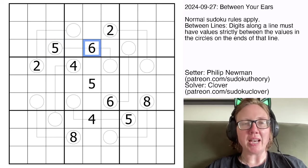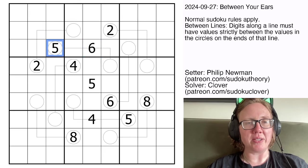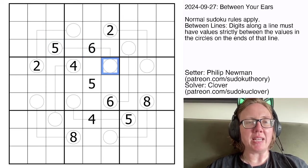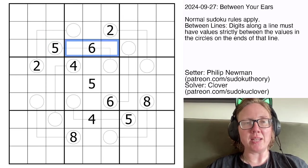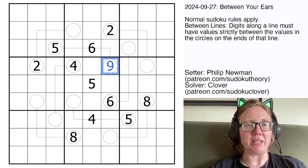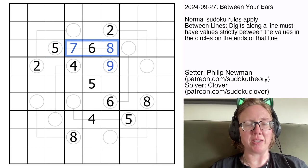So for example, because we already have a 6 on this line, 6 has to be in between 5 and something else, so the something else has to be a pretty high number. And in fact, to fit in enough different digits in between 5 and this unknown value, the only possible unknown value that can work is a 9, leaving a 7 and an 8 in the empty spots on the line.